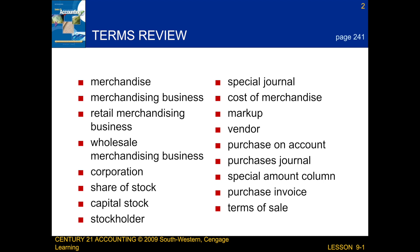A special journal is a journal used to record only one kind of transaction. The cost of merchandise is the price a business pays for goods it purchases. Markup is the amount added to the cost of merchandise to establish the selling price. A vendor is a business from which merchandise is purchased or supplies or other assets are bought. A special amount column is a journal amount column headed with an account title.